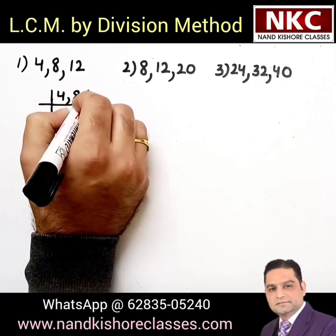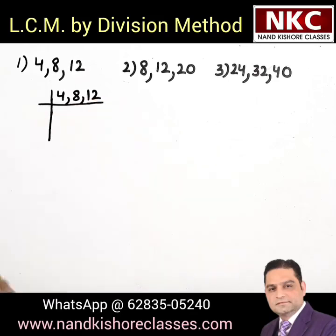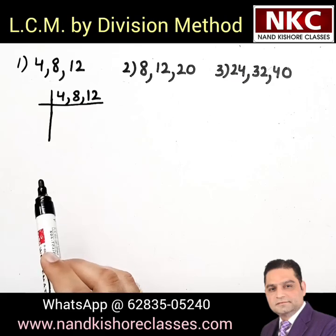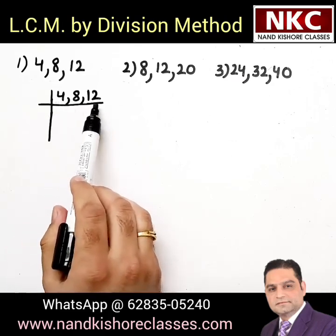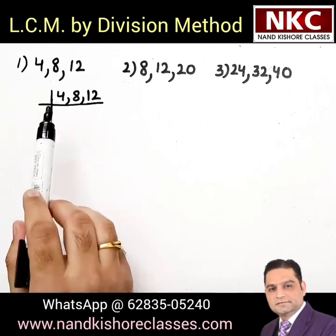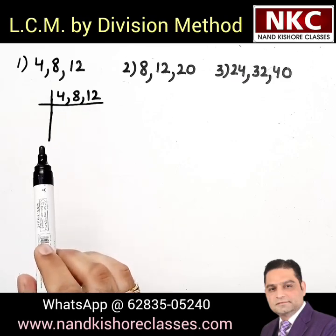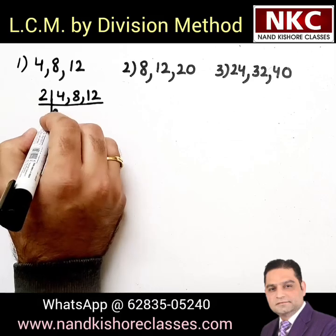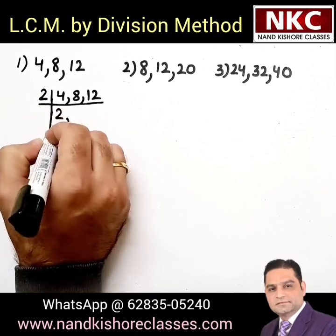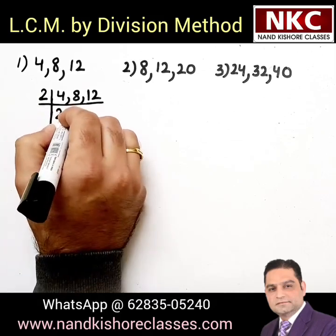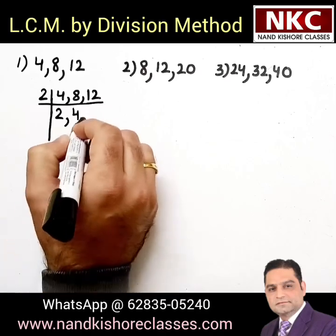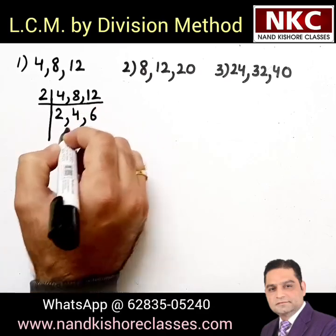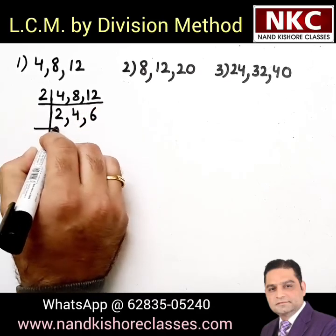Let's take 4, 8 and 12. Your first step is to identify a number which divides all of them. All of them are divisible by 2, so I am starting with 2. 2 times 2 is 4, 2 times 4 is 8, 2 times 6 is 12. First step is done.